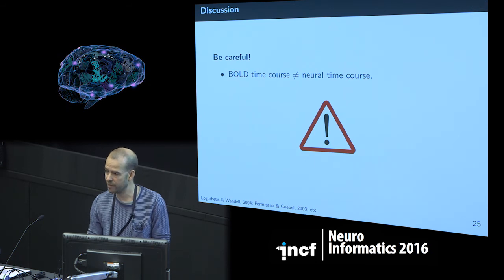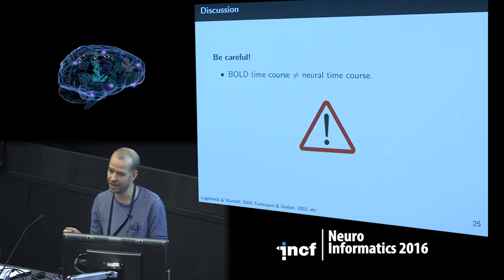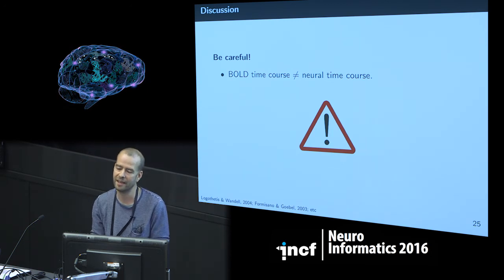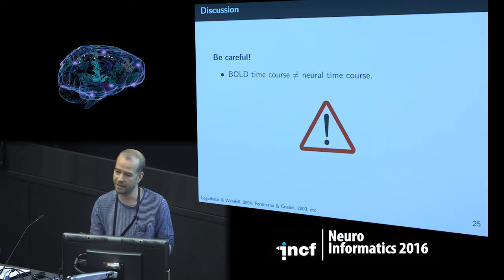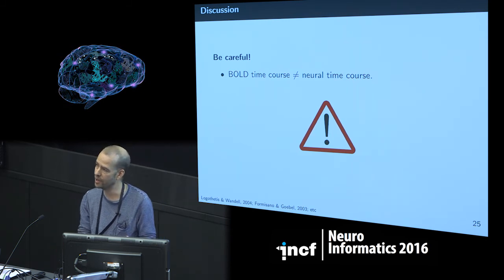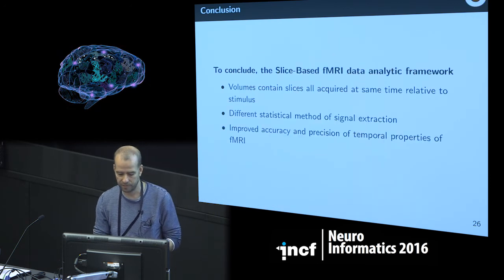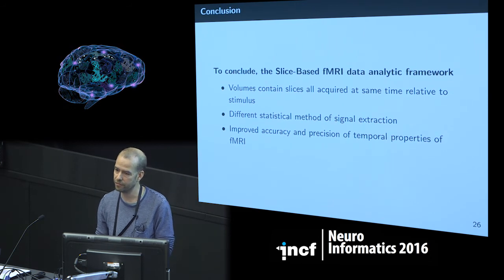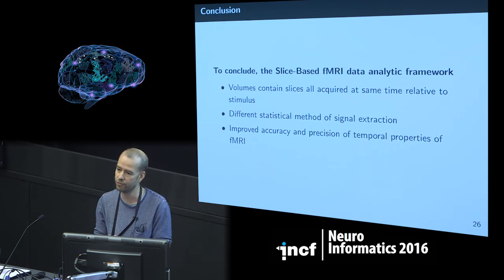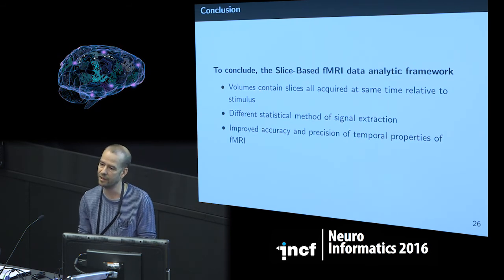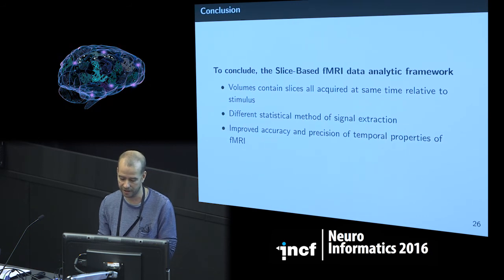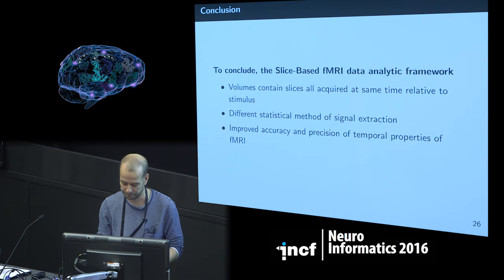However, an important caveat: we can now extract high temporal resolution BOLD signals, but we should not equate the BOLD signal with the time course of neural activity — these things are not the same. There is extensive literature on how well BOLD signals map onto neural activity, and if you use this method you should be aware of those limitations. To conclude, this method is fundamentally different from normal fMRI analysis — both in how whole-brain volumes are created from slices and in the statistical extraction method — and it improves the accuracy and temporal precision of fMRI.